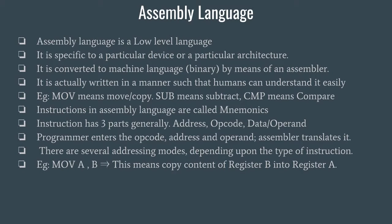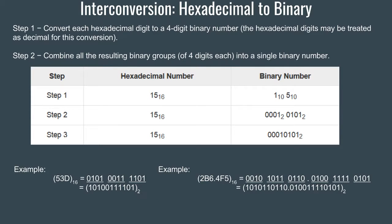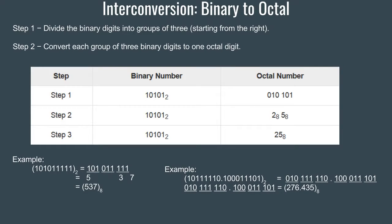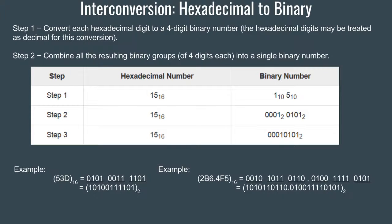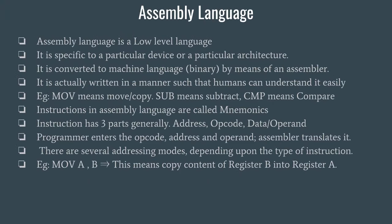Hello guys and welcome back. By now we have covered everything about number systems. Just one topic I missed was the interconversion from octal to hexadecimal and hexadecimal to octal. Unlike the other conversions, we do not have any direct conversion method. You first convert octal to binary, then binary to hexadecimal — a two-step process. The same goes for hexadecimal to octal conversion.